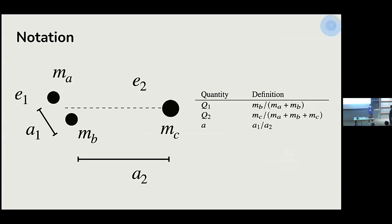This is the notation we use. The three stars are Ma, Mb, and Mc. Subscript 1 refers to the inner level and subscript 2 to the outer level. We define two mass ratios: q1 is the mass ratio of the inner level and q2 is the mass ratio of the outer level. A refers to the semi-major axis ratio.